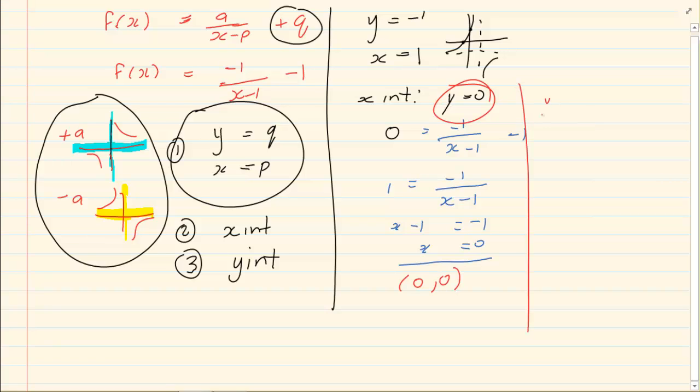Now my Y intercept. Y intercept X is equal to 0. So I have Y is equal to minus 1 over 0 minus 1 minus 1. So Y is equal to minus 1 divided by minus 1 is 1 minus 1 is 0.